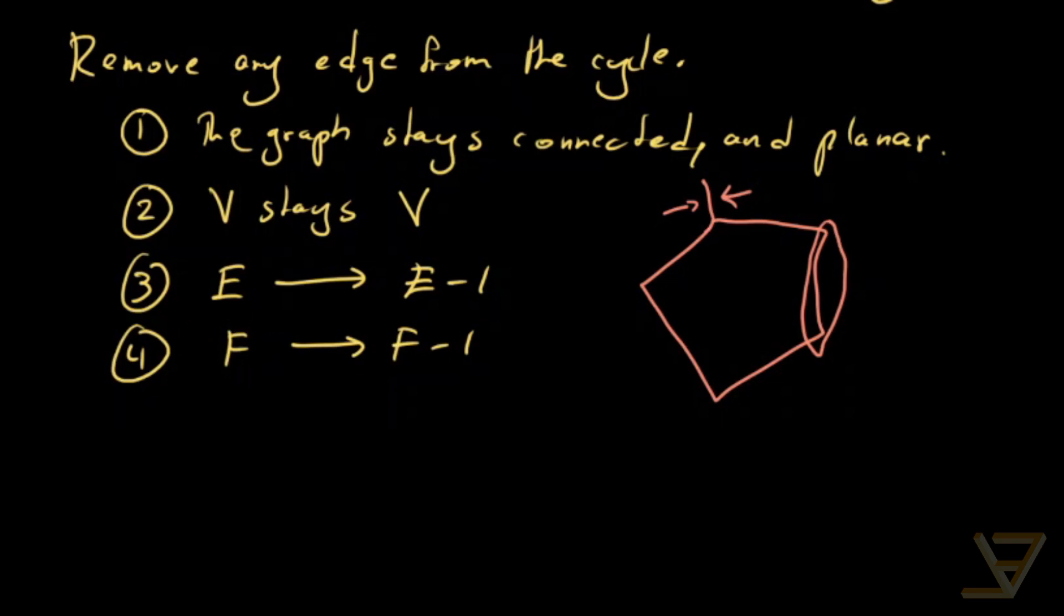But an edge of a cycle, on one side it has one face, and on the other side it has another face. And if we were to remove it, so if we were to remove this surgically, then what happens is that this edge, it joins two faces together. So we're left with one less face.